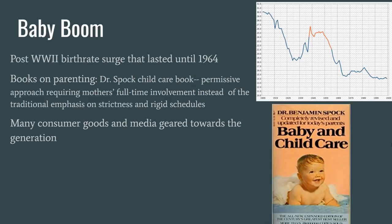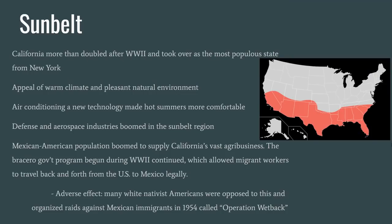Consumer goods and media were geared toward the baby boom generation, and along with abundant job and college opportunities, no generation ever had it so good. The Sun Belt refers to the southern half of the United States. Previous periods had seen migration north for factory work, but that reversed in Period 8. Led by California's booming population, people flocked to warm southern climates made tolerable by air conditioning. Aerospace industries centered in Florida and Texas brought high-paying jobs. There was also continuing migration from Mexico, supplying labor for California's agribusiness. The government Bracero program allowed legal cross-border travel for seasonal work, but it was threatened by white nativist sentiment, with organized raids against Mexican immigrants to shut off the flow of migrants.